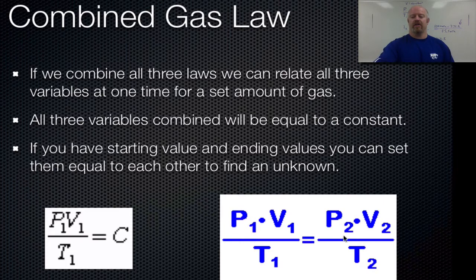So we can have a combined law that has P1, V1, T1 equaling P2, V2, T2, where basically we're now taking Boyle's law, Guy Lussac's law, and Charles' law, and we're combining them into one equation that's usable.